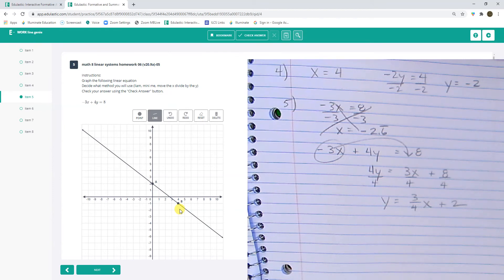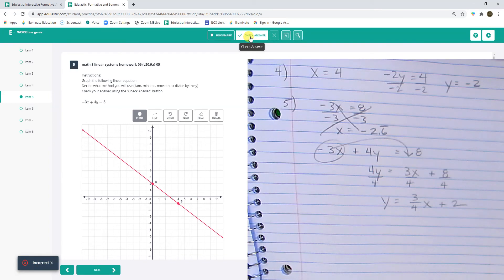Where did I lose it? I lost something. Move the x. Divide by the y. Mini-me's would say that the intercept is at negative 2.3. I don't... Something's off. Something is off. Check my answer. It's wrong.